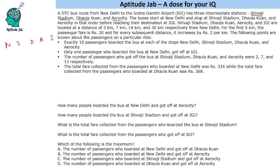The distance from New Delhi is given. It is 3 km from New Delhi to Shivaji Stadium. New Delhi to Dholakunha it is 7, so that means 4 from Shivaji Stadium to Dholakunha. Then 14 for Aero City, so 7 from Dholakunha to Aero City, and Aero City to IGI it is 16. So a total of 3, 7, 14, and 30 km from New Delhi.